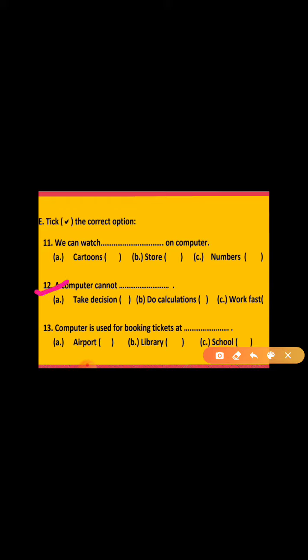12th is, a computer cannot dash. Computer क्या नहीं कर सकता? And your options are, first is take decision, second is do calculation, third is work fast.